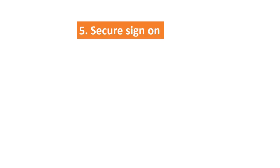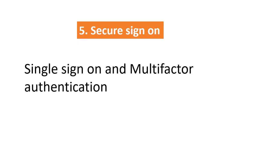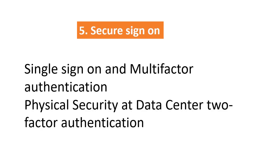Point number five, secure sign-on. Make sure single sign-on is implemented to access systems and applications. Ensure multi-factor authentication is implemented on critical applications, systems, and network access. Check and verify that data centers, server rooms, or any specialized processing areas are secured with two-factor authentication to avoid unauthorized access.